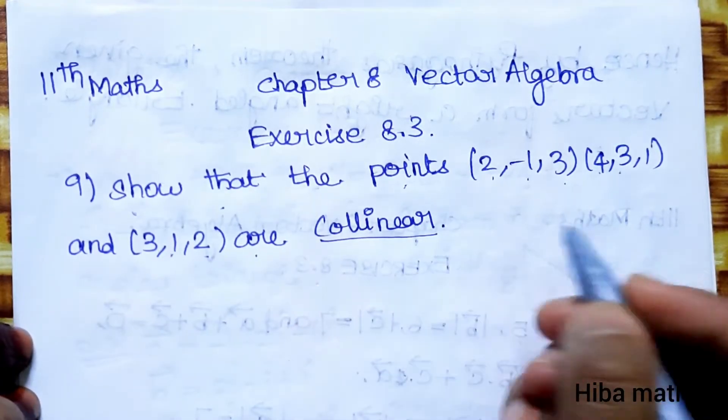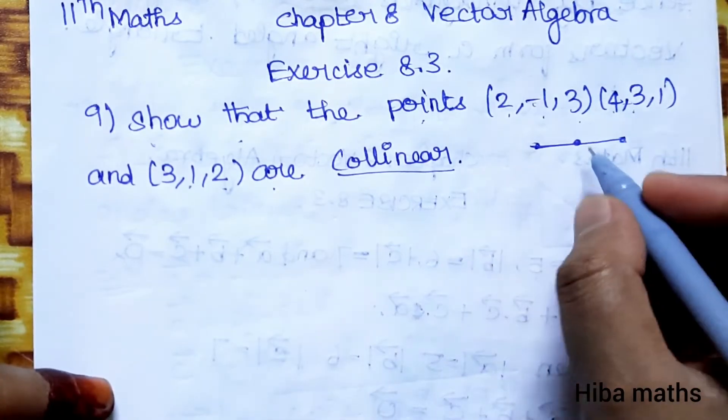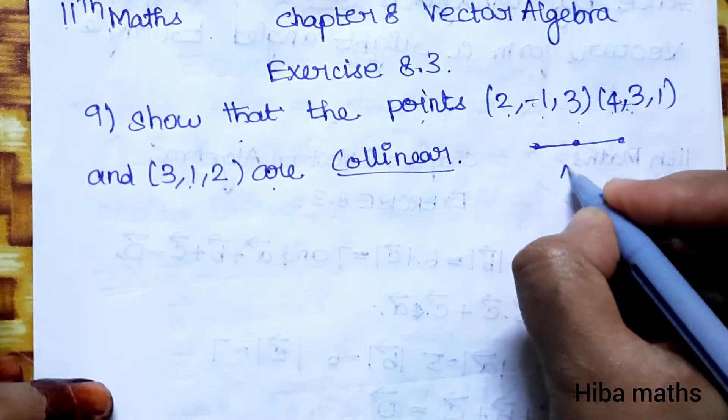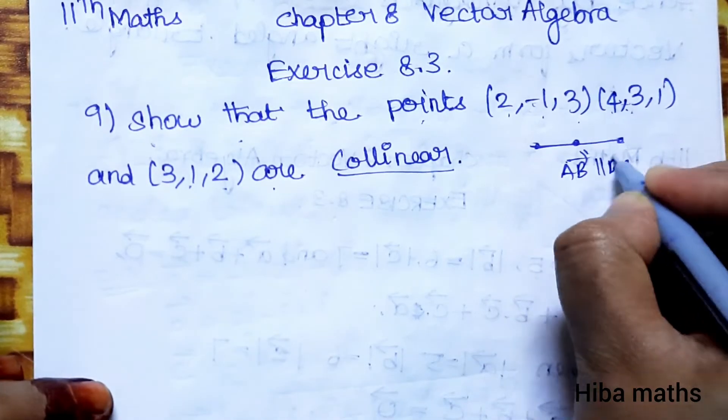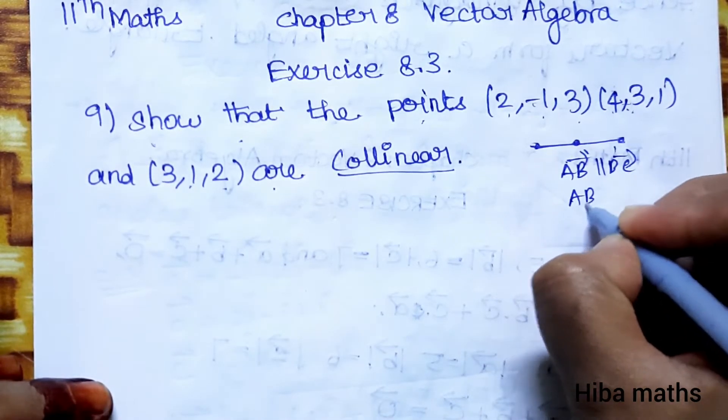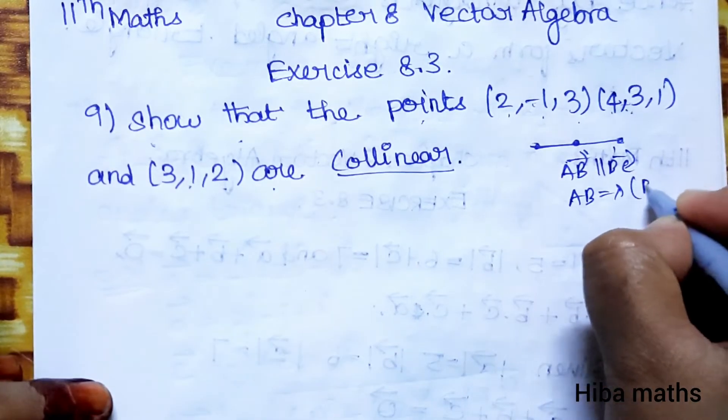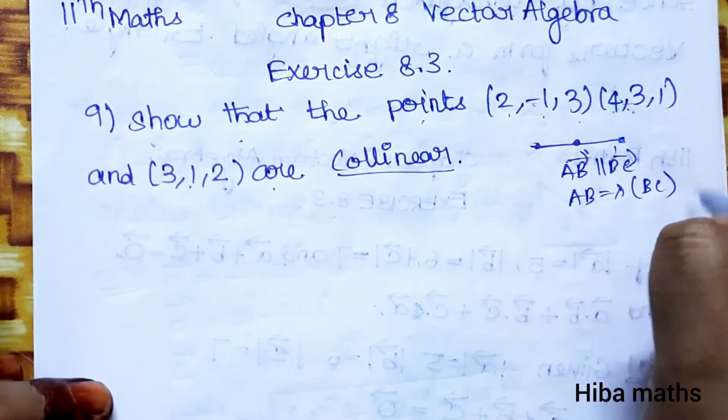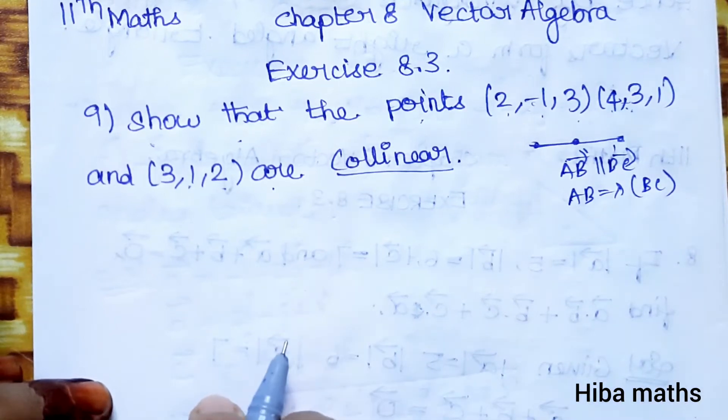Collinear means the points lie on the same line. AB vector is parallel to BC vector - AB is a scalar multiple of BC. To show three points are collinear, we show their connecting vectors are parallel.